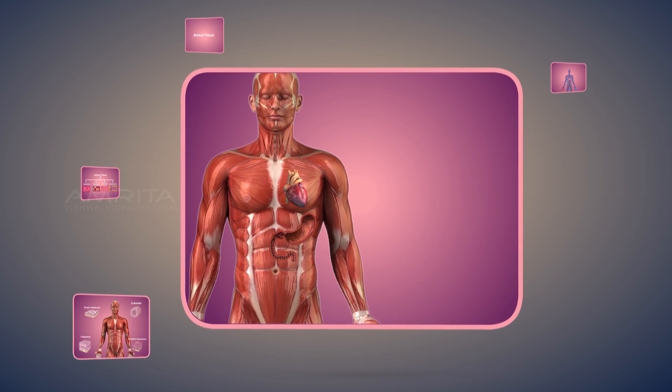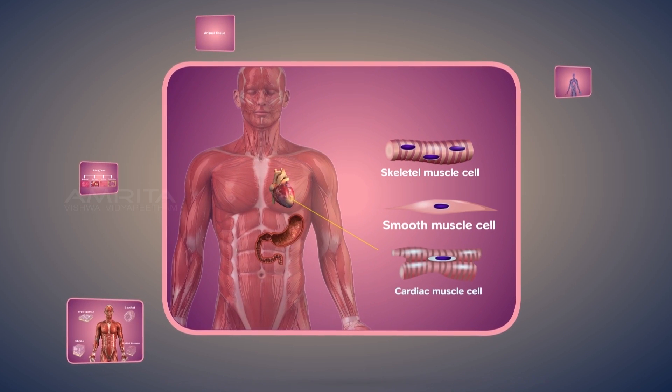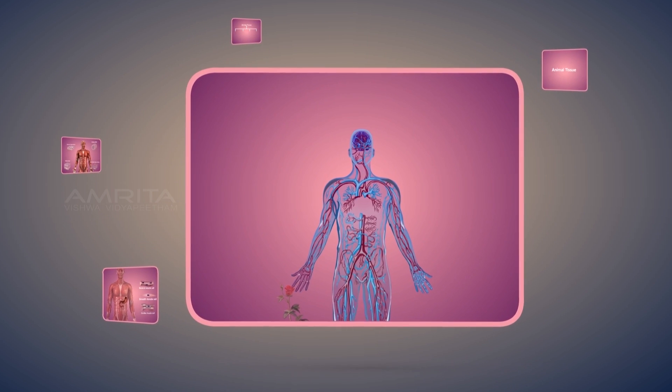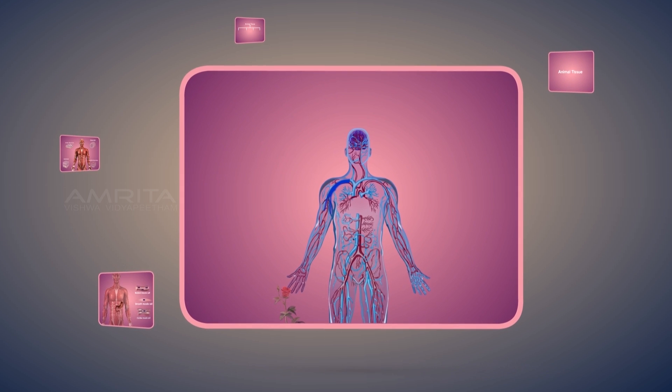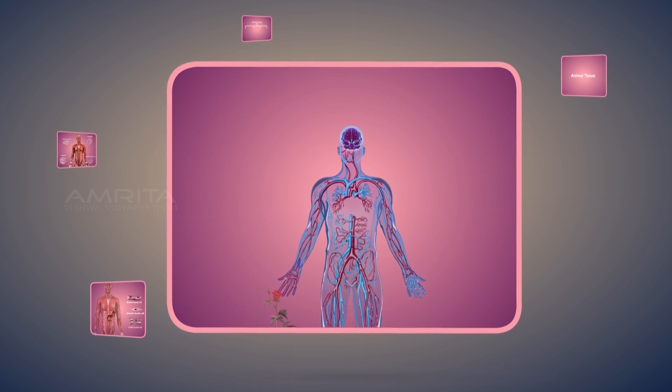The three types of muscle tissues are skeletal, smooth and cardiac muscles. Cells of the nervous system, called nerve cells, are specialized to carry stimulus from one place to another within the body.